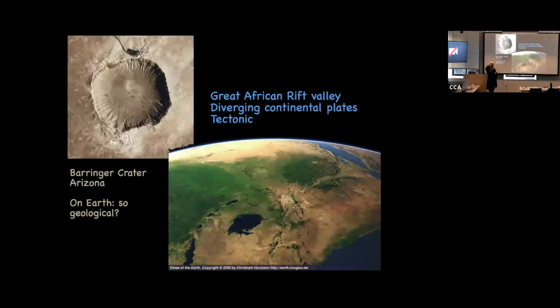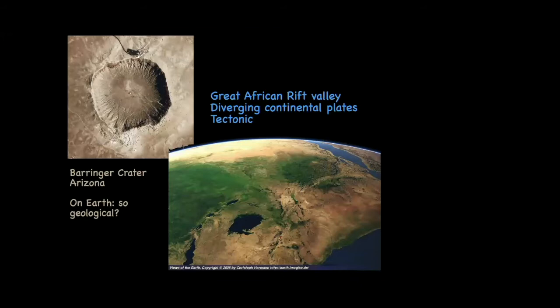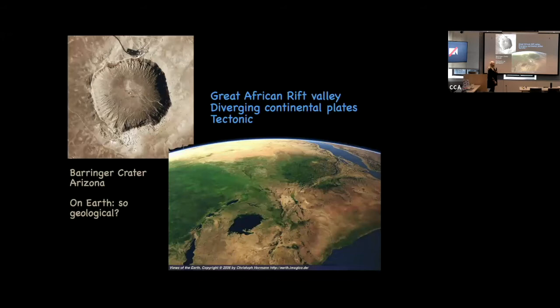The explanation for Valles Marineris on Mars involves stress relief from a buildup of volcanic province associated with Olympus Mons. When you look at things on Earth — the Great African Rift Valley is a tectonic setting with slow divergence of continental plates, happening on geological timescales. And Barringer Crater is an astronomical event that happened in maybe minutes, but originally the proposal that it was an impact crater was very controversial because people were used to thinking about geological timescales.